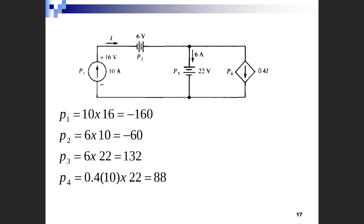For P3, P3 equals I multiplied by V. The voltage value is 22 and the current value is 6. So P3 equals 6 × 22 = 132. The sign is positive because the current enters this element in the positive direction, through the positive terminal. So P3 = +132.